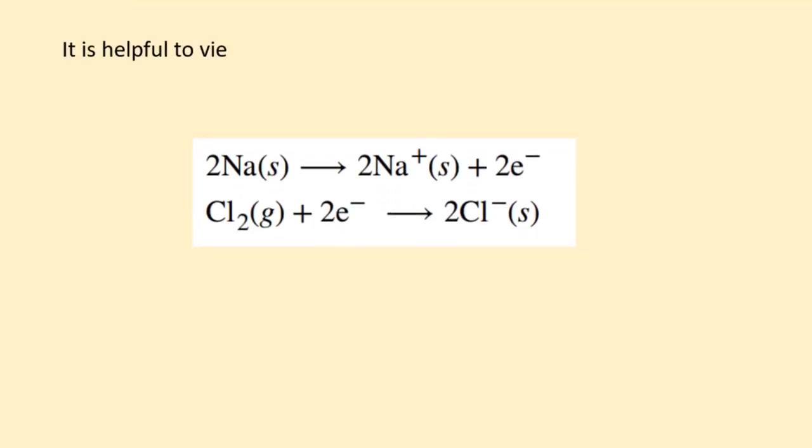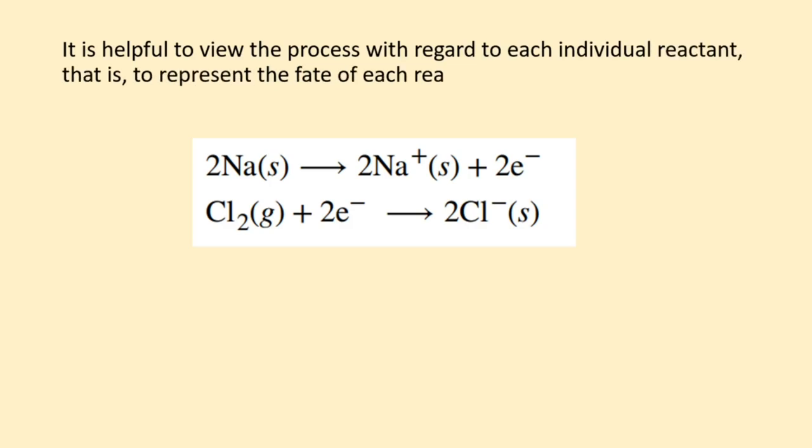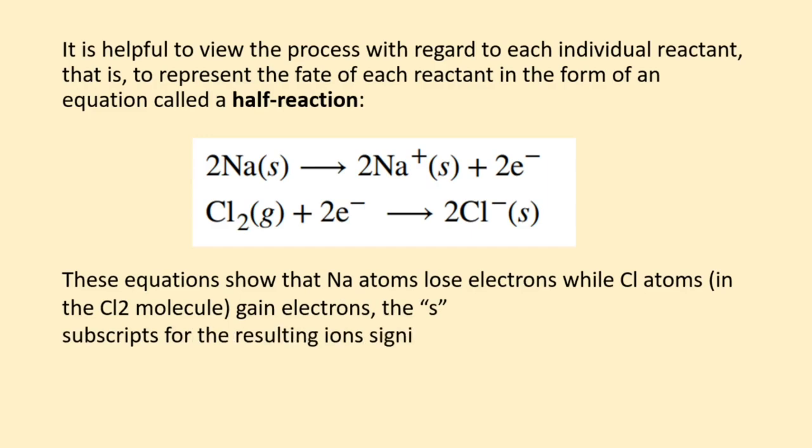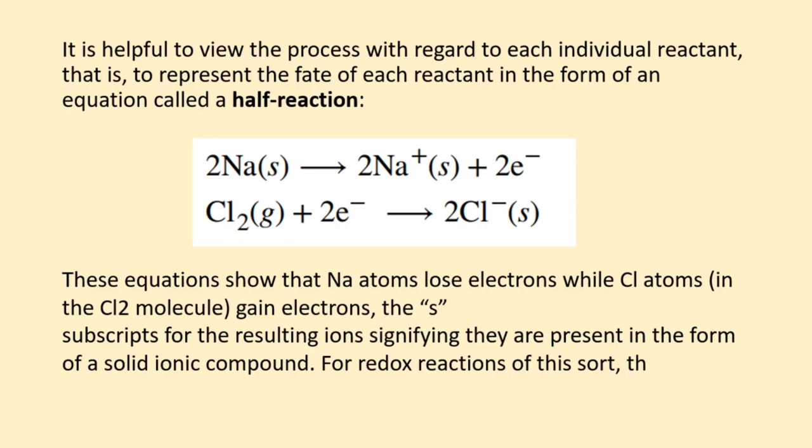It is helpful to view the process with regard to each individual reactant, that is, to represent the fate of each reactant in the form of an equation called a half-reaction. These equations show that sodium atoms lose electrons while chlorine atoms in the Cl2 molecule gain electrons, the S subscripts for the resulting ions signifying they are present in the form of a solid ionic compound.